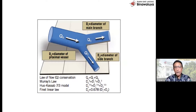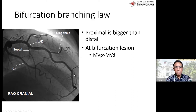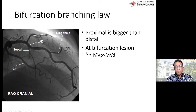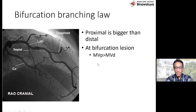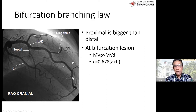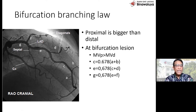Tapi bukan hanya ini saja. Kita harus menghadapi misalkan pada bifurkasi yang bersifat fraktal yang kita lihat. Aksioma pertama adalah bahwa yang di proximal lebih besar daripada distal. Itu aksioma. Jadi kalau di sini misalkan C, ini B, ini A, maka rumusnya adalah C = 0,678 kali (A + B). Bagaimana dengan di sini? Sama saja: E = 0,678 kali (C + D). Demikian juga G = 0,678 kali (E + F).